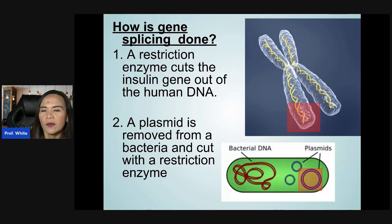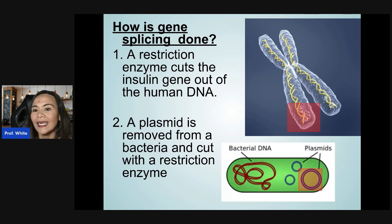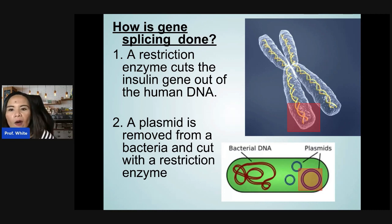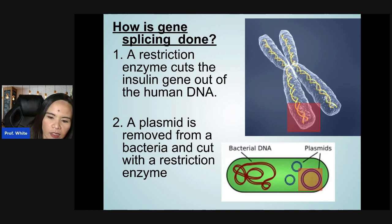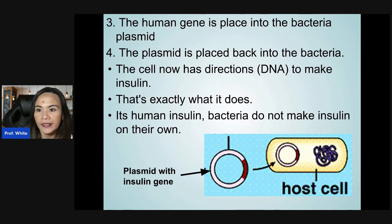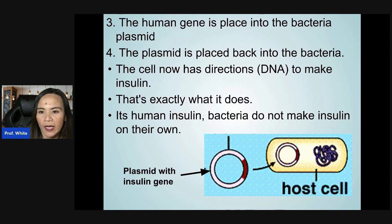How is gene splicing done? A restriction enzyme cuts the insulin gene out of the human DNA. A plasmid is removed from a bacteria and cut with a restriction enzyme, which also cuts the bacterial DNA. The human gene is then placed into the bacterial plasmid.